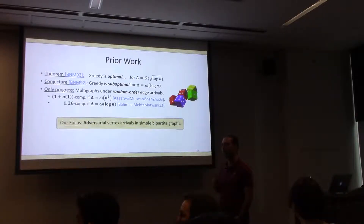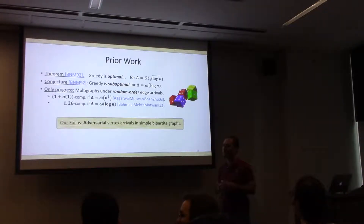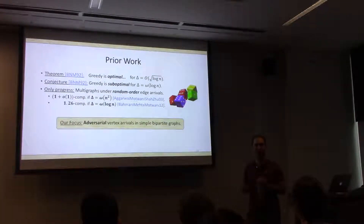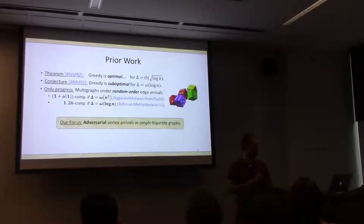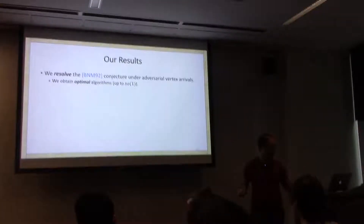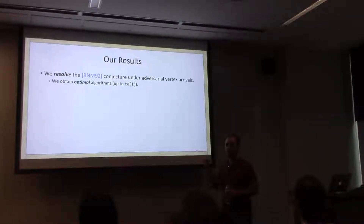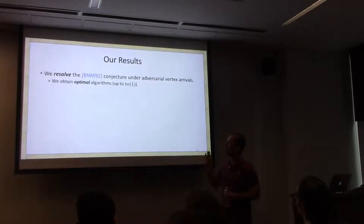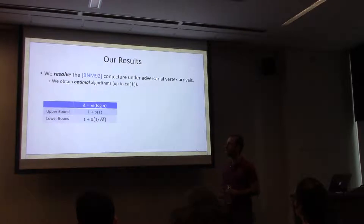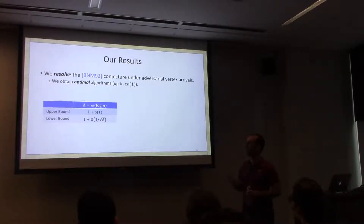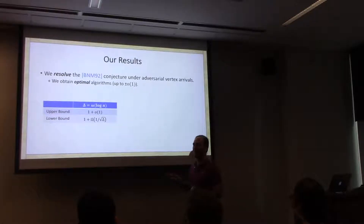Let me tell you what we show. We resolve the conjecture of Bartal et al. under adversarial vertex arrivals. Not only do we show you can beat greedy, we get optimal algorithms up to plus-or-minus little-order-of-one terms. We give an upper bound of one-plus-little-order-of-one, which is at most little-order-of-one from the best you could do.